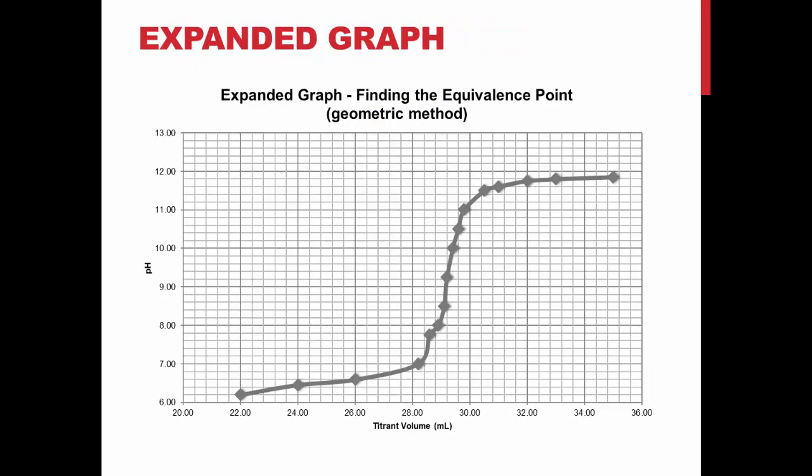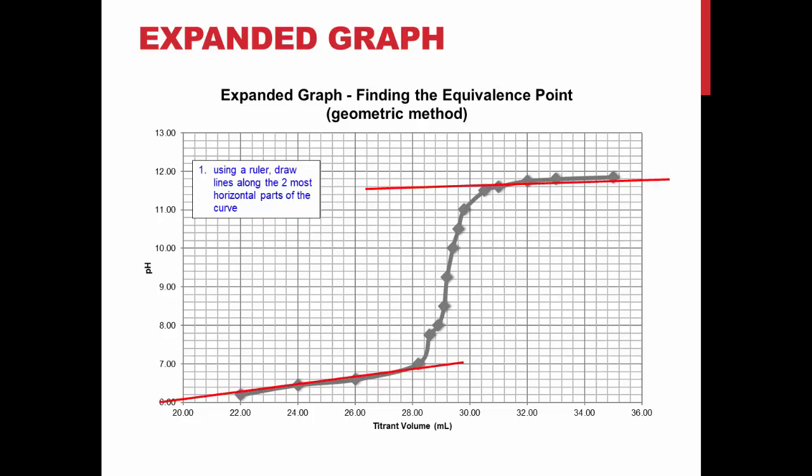You will need to manually determine the equivalence point of the reaction from your titration curve. To do this, draw two straight lines, one above and one below the large shift in pH surrounding the equivalence point. Draw a third line along the vertical part of the curve, so that it intersects with both the previous two lines.